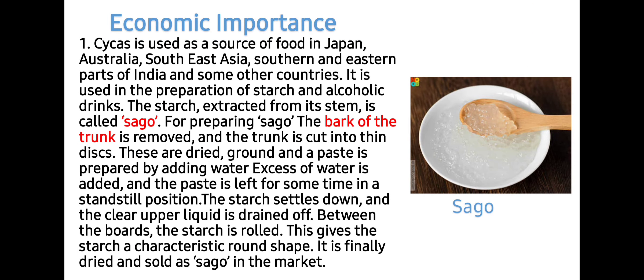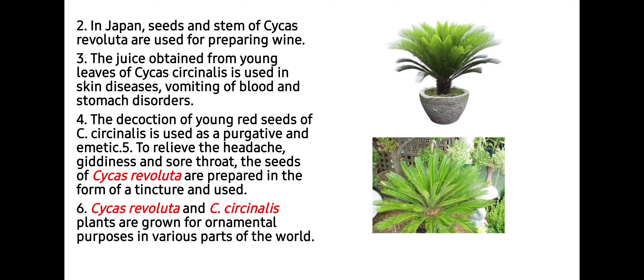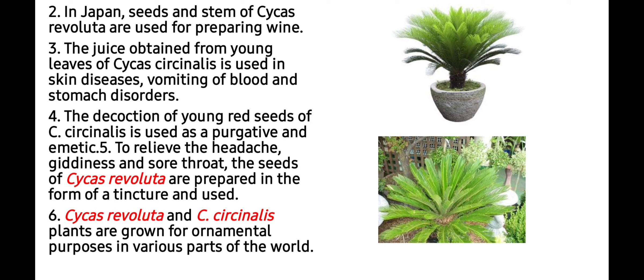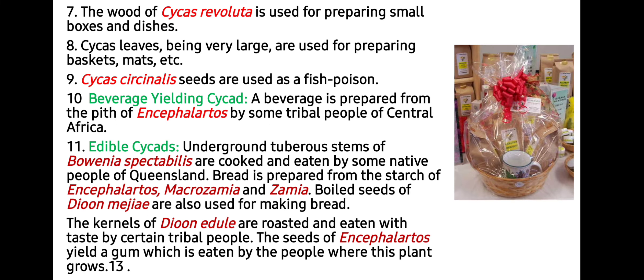This is the Sago or Sabudana which is eaten during fasts. In Japan, seeds and stems of Cycas revoluta are used for preparing wine. The juice obtained from young leaves of Cycas circinalis is used in skin diseases, vomiting of blood, and stomach disorders. The decoction of the young red seeds of Cycas circinalis is used as a purgative and emetic to relieve headache, giddiness, and sore throat. The seeds of Cycas revoluta are prepared in the form of a tincture and used. Cycas revoluta and Cycas circinalis are often grown for ornamental purposes in various parts of the world and are sold at high cost. The wood of Cycas revoluta is used for preparing small boxes and dishes. Cycas leaves, being very large, are used for preparing baskets and mats.